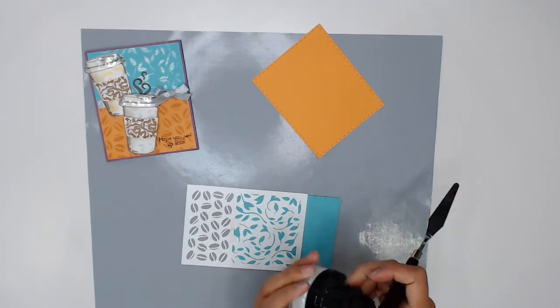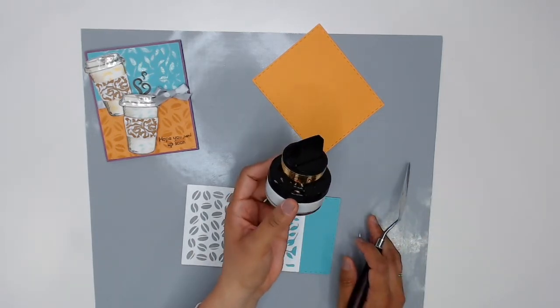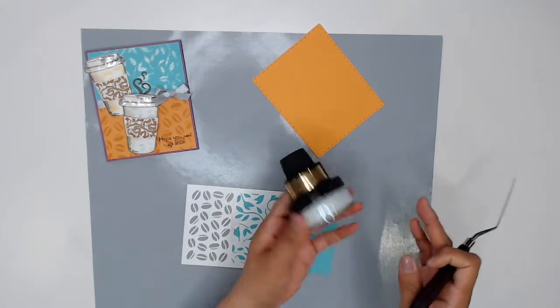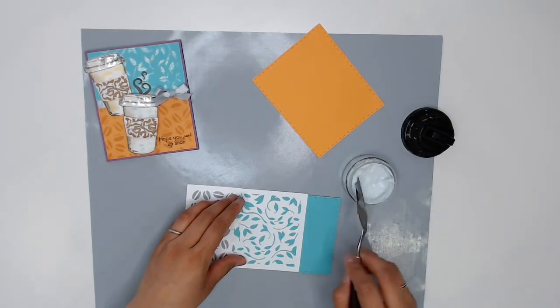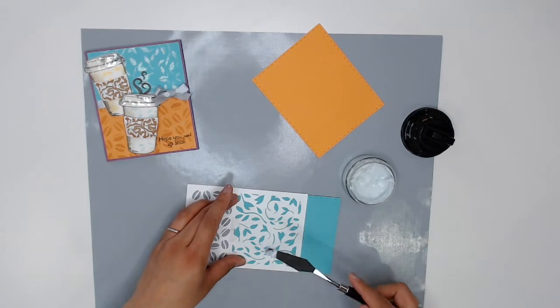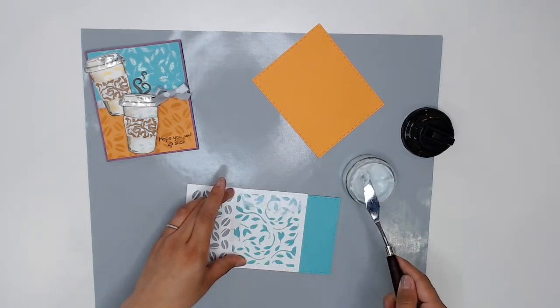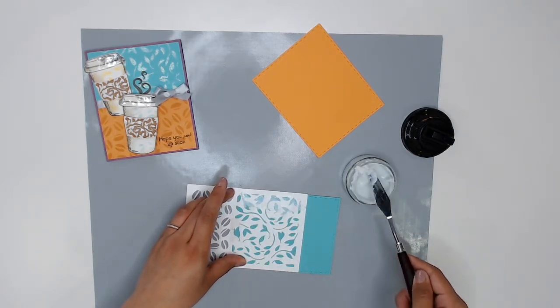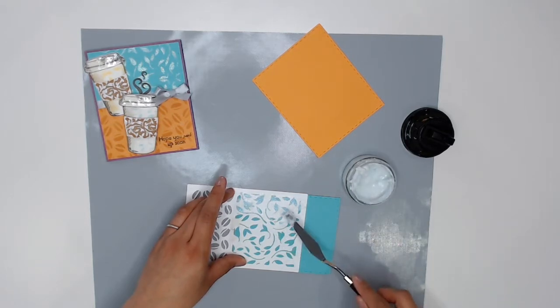I want to use this wonderful, it's not a texture paste but it has a great body to it. It's the Glitter Kiss by Cosmic Shimmer and this is in the color Frosty Sparkle Kiss. So I'm just going to put a little bit on my spatula and then I'm going to just go across with my spatula on this stencil. And I want a thin layer nothing too crazy but if you do want to thicken it up a bit then you can definitely add a second layer.